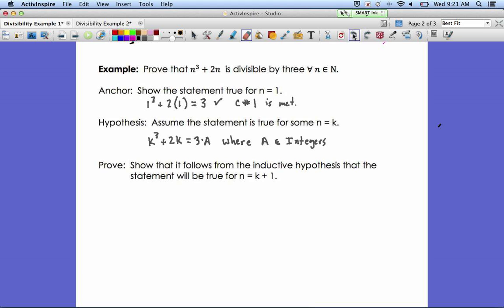And now what we want to prove is that it follows from this inductive hypothesis that the statement will also be true for the next natural number, which will be k plus 1. So we'll write down our show statement. We want to show that k plus 1 cubed plus 2 times the quantity k plus 1 is also divisible by 3. So we'll say it's equal to 3b, where b is some other member of the integers.